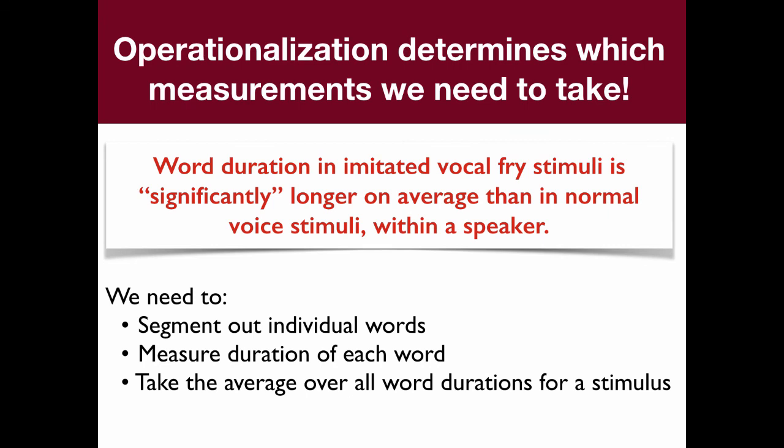There we have it — an operationalized hypothesis that tells us exactly what measurements we need to take. We need to segment out individual words so we can measure the duration of each word, then take the average over all word durations for each stimulus. You can see how we've gone from a very vague question about what makes imitated vocal fry stimuli sound fake, to a specific scientific question, to a testable hypothesis, and finally to an operationalized hypothesis that makes clear both the measurements and the analysis needed. That's an example of operationalizing a research question.